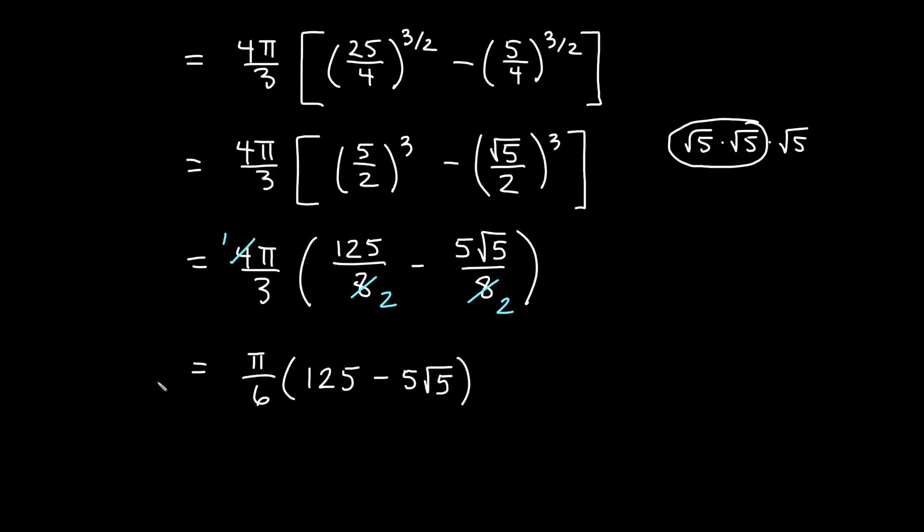We'll leave our answer like that. This is surface area and area should be in square units. So this will be π over six quantity 125 minus five root five units squared. That is our second example worked out for surfaces of revolution from calculus using integrals. We've got one left. Check out our example three video.